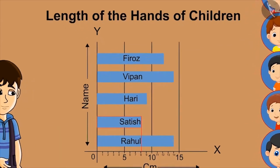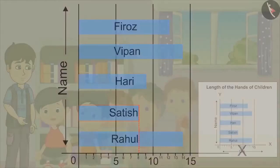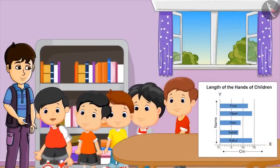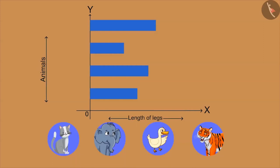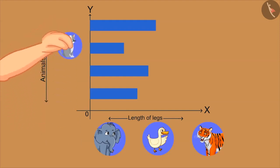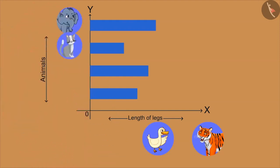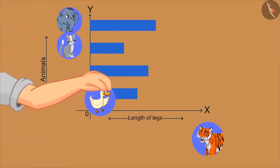My hand is the smallest of all. Brother, let's make some more Strip Charts. Sure. Look at these strips. Can you guess and identify the animal having this length of legs? You all can put an animal sticker on the right strip. Very good. This one is of Elephant. Very good. And this one is of Duck.